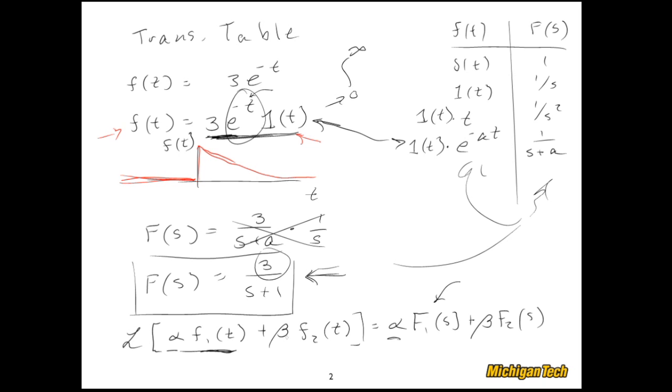So if I want the Laplace transform of alpha times f1 of t, I can just take the Laplace transform of f1, this thing, and then multiply the result by alpha. And that's exactly what I did here. Furthermore, if we had two things sum together, like the f1 and the f2, I can individually take the Laplace transforms of f1 and f2 and then combine them.